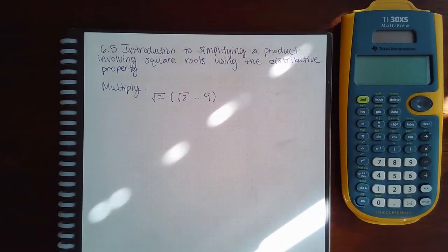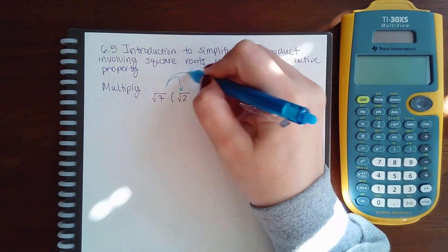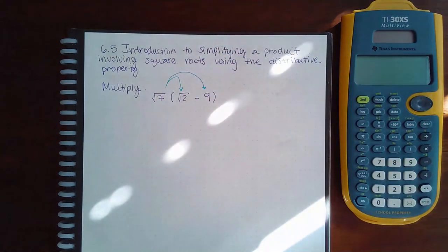Here we have 6.5 introduction to simplifying a product involving square roots using the distributive property. Distributive property means I need to take what's on the outside and multiply it by both entities on the inside.